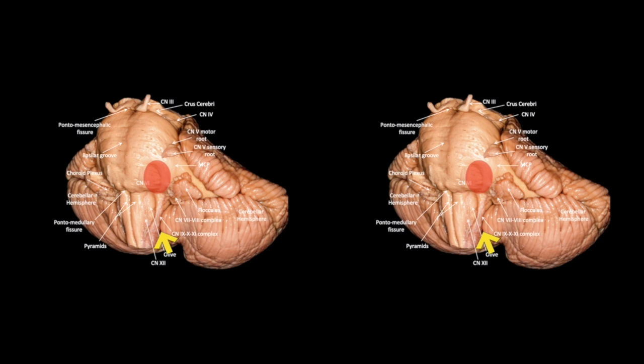However, we thought that a far lateral approach would still allow a relatively ventral angle of attack but would provide improved access to the pontomedullary fissure where the lesion presents to the surface, while aligning better with its long axis given its superior extension. The patient was secured in a park bench position and a classic hockey stick incision was planned.